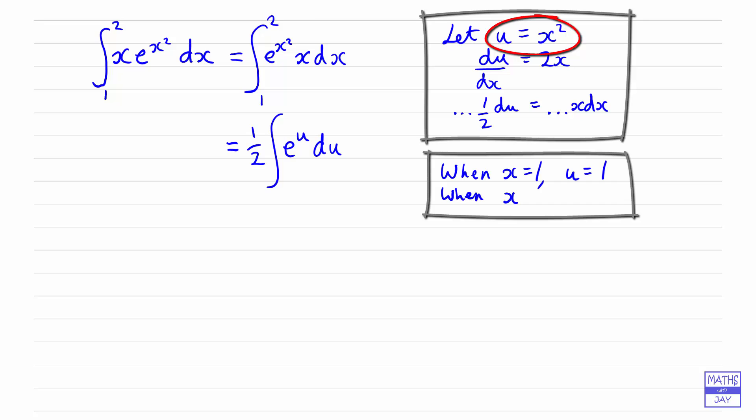And then our other limit, so when x is equal to 2, u is going to be 2 squared, so u is going to be 4. So our new limits are 1 and 4.